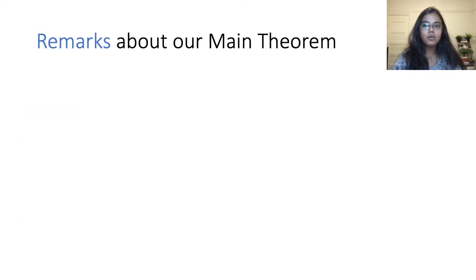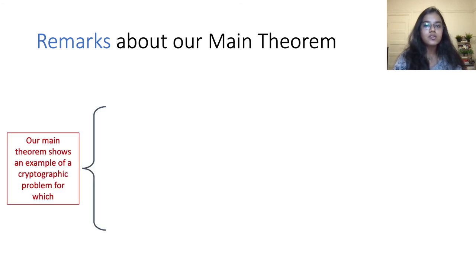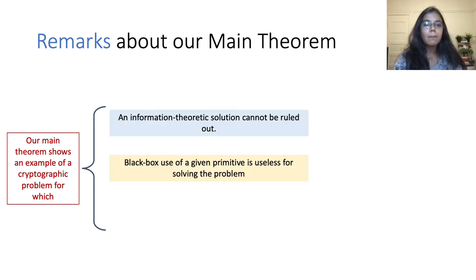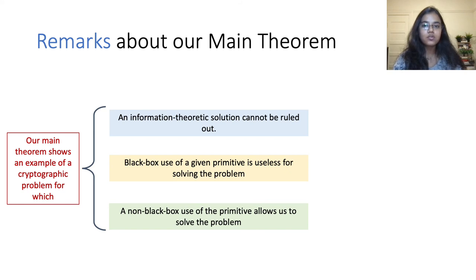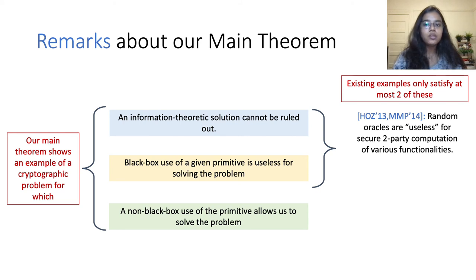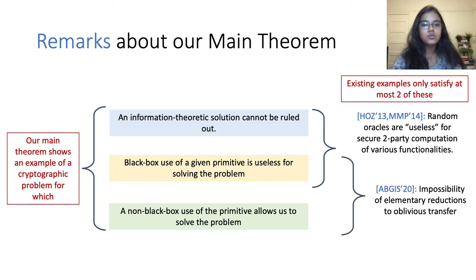Before concluding the discussion on our lower bound, I want to mention an interesting observation. Our main theorem shows that the task of designing an elementary reduction for all efficiently computable functions with full security in the dishonest majority setting is an example of a cryptographic problem for which: an information-theoretic solution cannot be ruled out, black-box use of a given primitive is useless for solving the problem, and a non-black-box use of the primitive allows us to solve the problem. This combination seems rather unique to our setting, since we are only aware of examples satisfying at most two of these conditions — for example, Haitner et al. and Mahmoudi et al. showed examples satisfying the first two, while Applebaum et al. gave an example where the last two are satisfied.